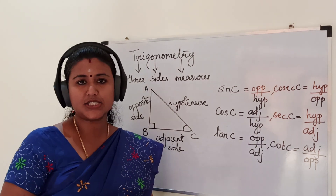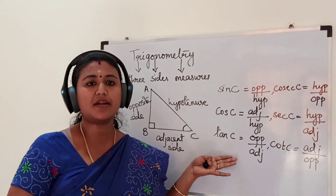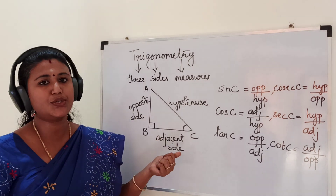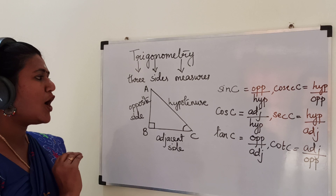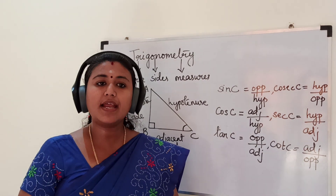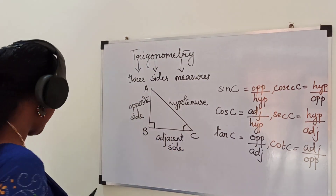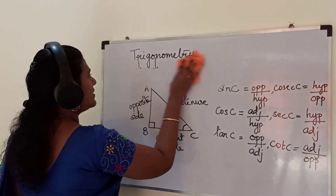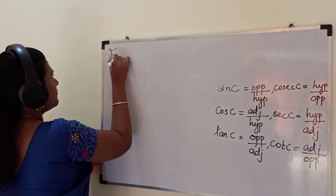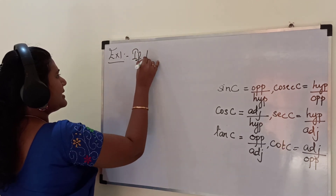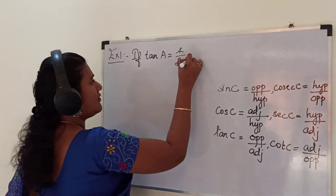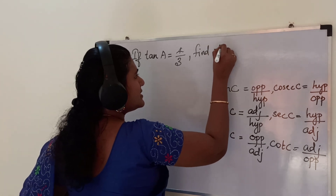Now we will restrict our discussion only to acute angles. We can define these trigonometric ratios for any angle, but in this class — class 10 — we will restrict our discussion only to acute angles. Now we will see one example: how to find the trigonometric ratios. If we know one ratio, we can find the remaining ratios. Example 1: if tan A is equal to 4 by 3, find the other trigonometric ratios.